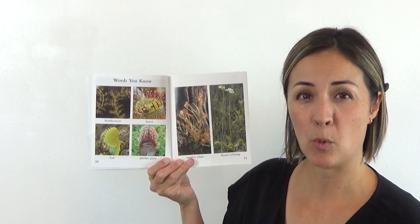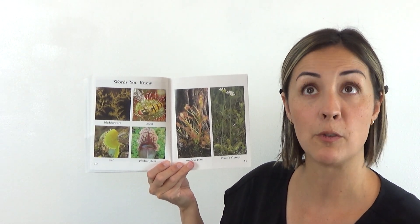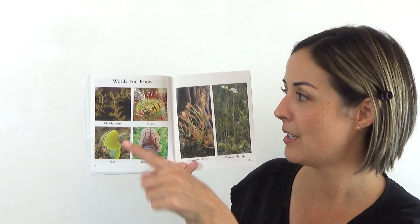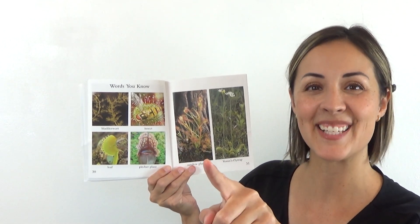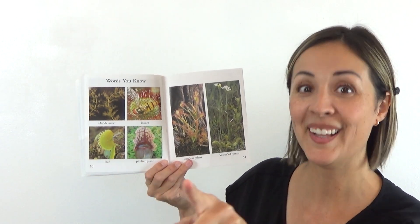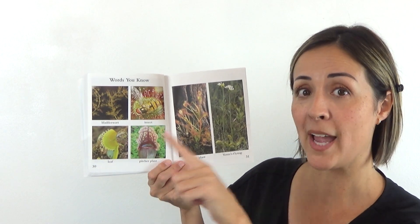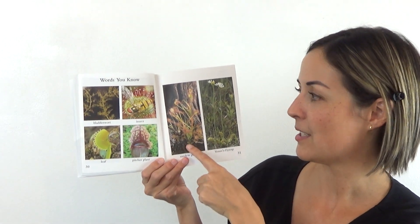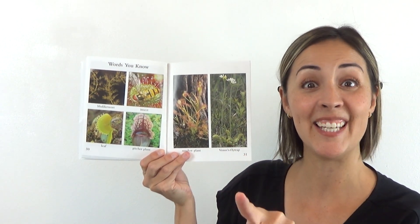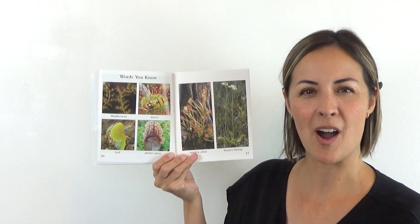And these are some words that we should know now. Will you echo me? My turn first. See if you know each of these words. My turn. Bladderwort. Bladderwort. Insect. Insect. Right? Because of course the plants eat the insects. Leaf. Leaf. Pitcher plant. Pitcher plant. Sundew plant. Sundew plant. Venus flytrap. Venus flytrap. You got it.